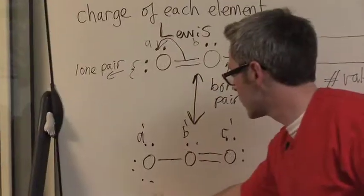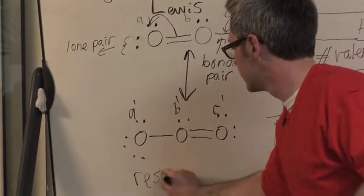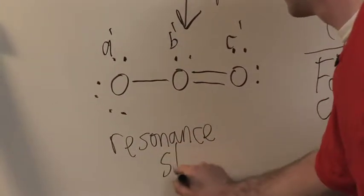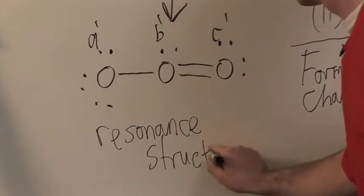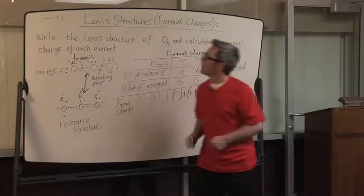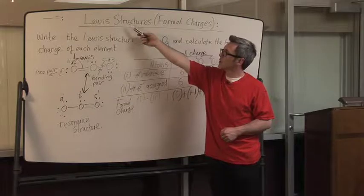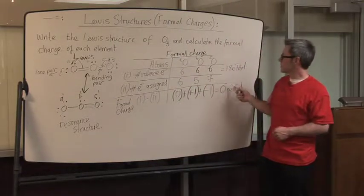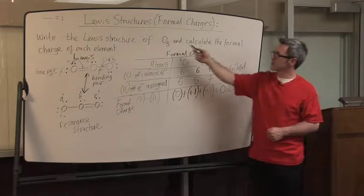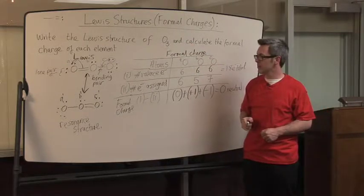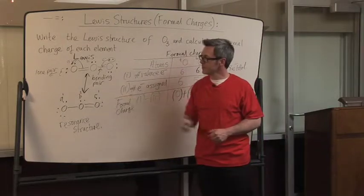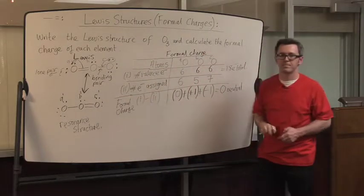Whenever you do this, this is called a resonance structure. So whenever you're asked to solve a question where you look at Lewis structure and formal charge, make sure that the sum of all the formal charges equals the overall charge on the molecule. And look out for resonance structures. Thank you very much.